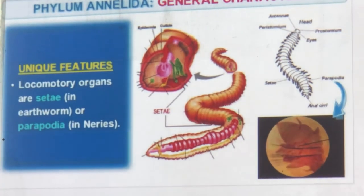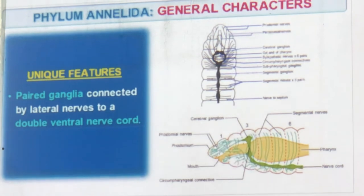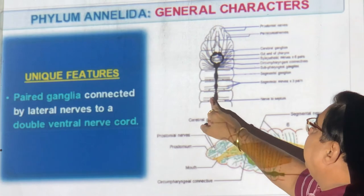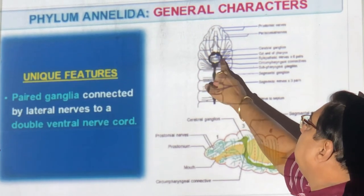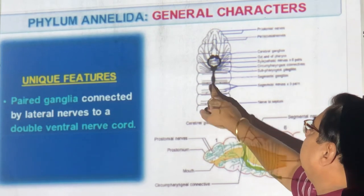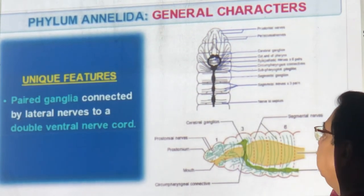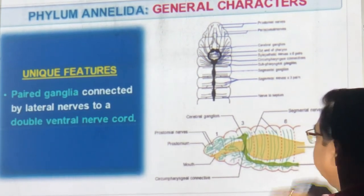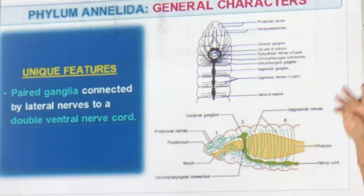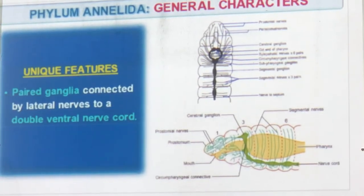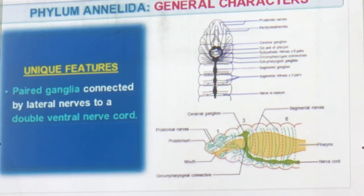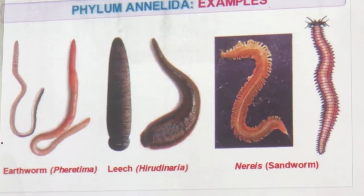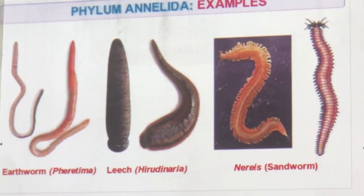The nervous system of Annelida shows paired ganglia and a double ventral nerve cord — first time this is seen. Nerves go around the mouth and come down with nerves coming out throughout the body. The excretory system uses nephridia. Examples: Pheretima (earthworm), Hirudinaria (leach), and Nereis (sandworm). Leeches are also used medically.